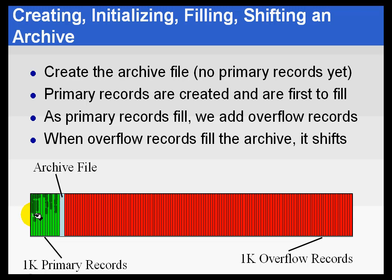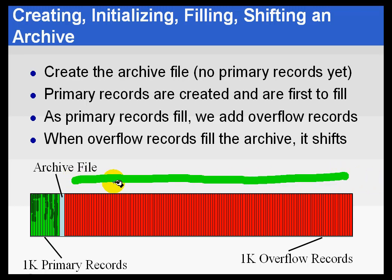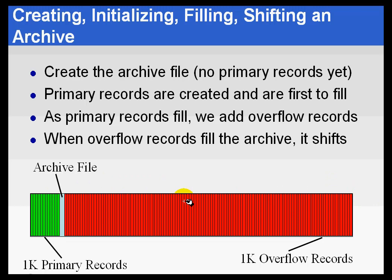At some point we'll reach a point where one of these PI tags has completely filled up its primary record — there's no more room for data. At that point we generate what we call an overflow record. We start by generating a single overflow record for that primary record that filled. When that overflow record fills completely, we generate another overflow record.